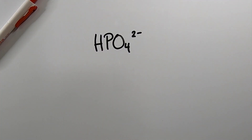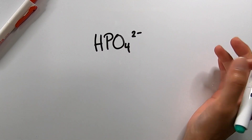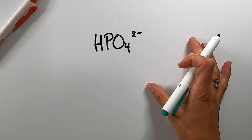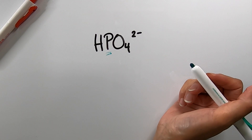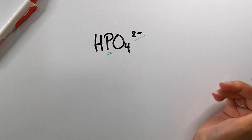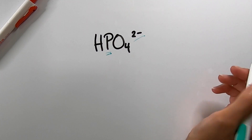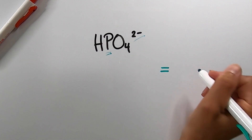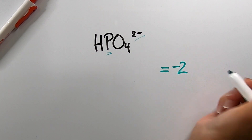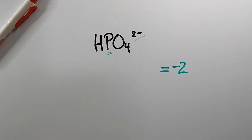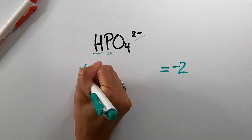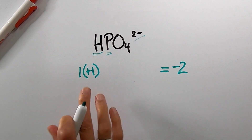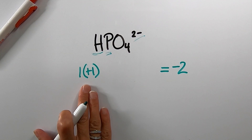Let's try another example: hydrogen phosphate. It looks a little bit different, however we're going to do it just the same way as the previous example. Suppose we're solving for the oxidation number of the phosphorus atom in this compound. First of all, notice there's an overall molecular charge, so instead of starting our equation with equal zero, we're going to start with equal negative 2 for the molecular charge. Then we have 1 hydrogen, so we'll do 1 times positive 1, which is the oxidation number of hydrogen from the periodic table.